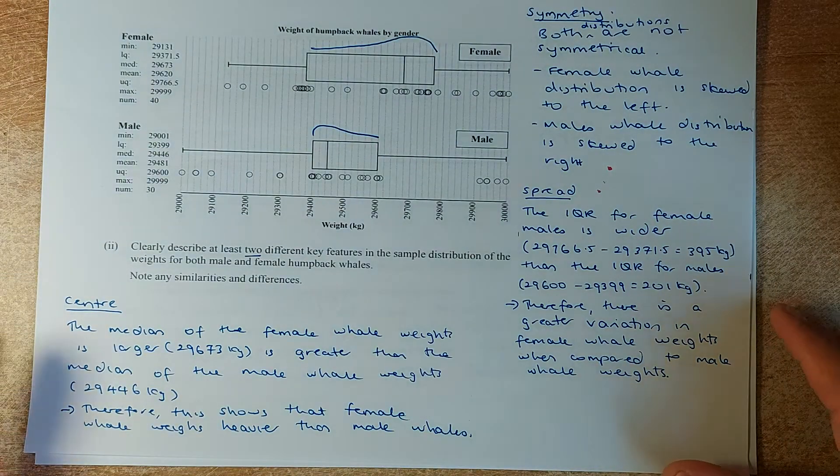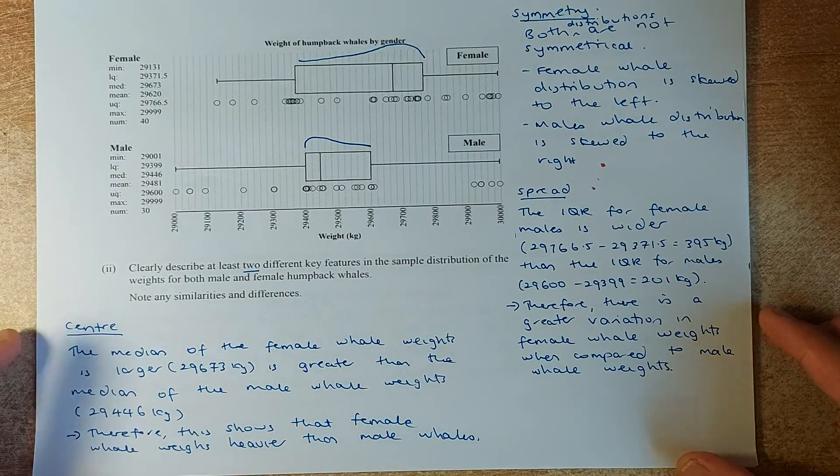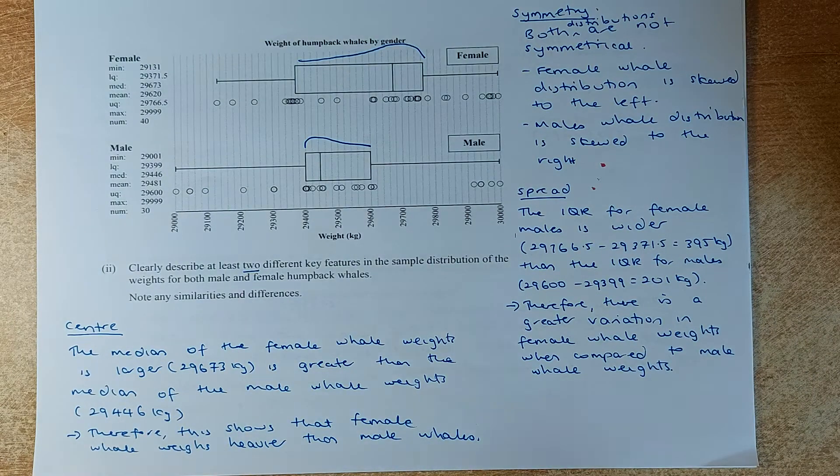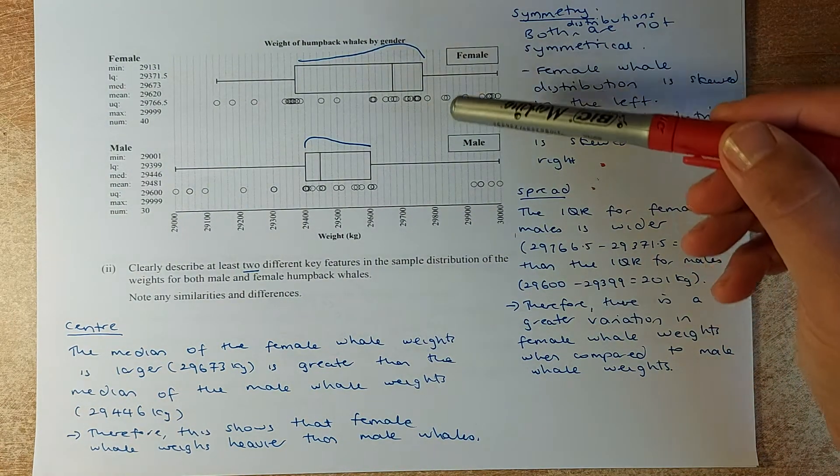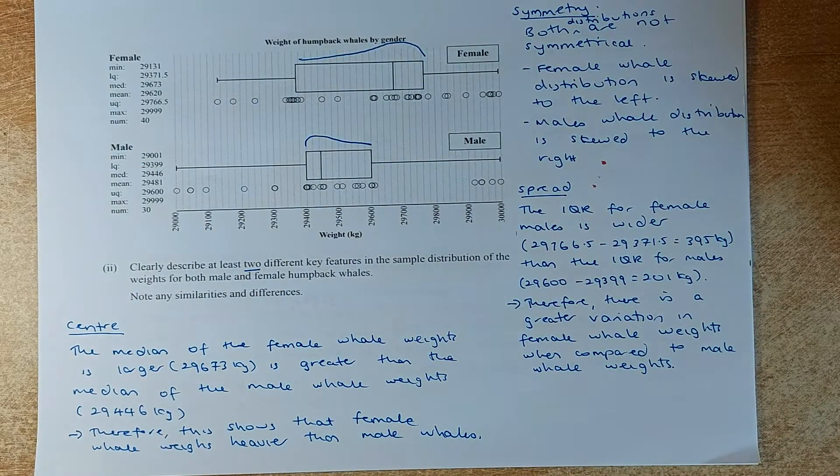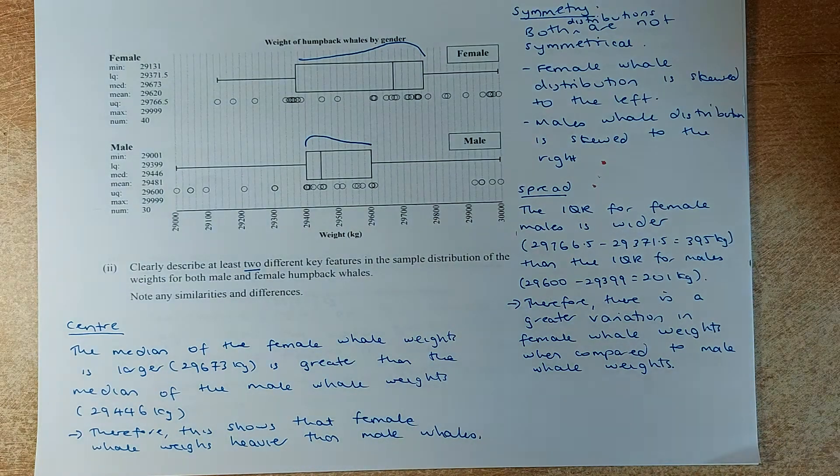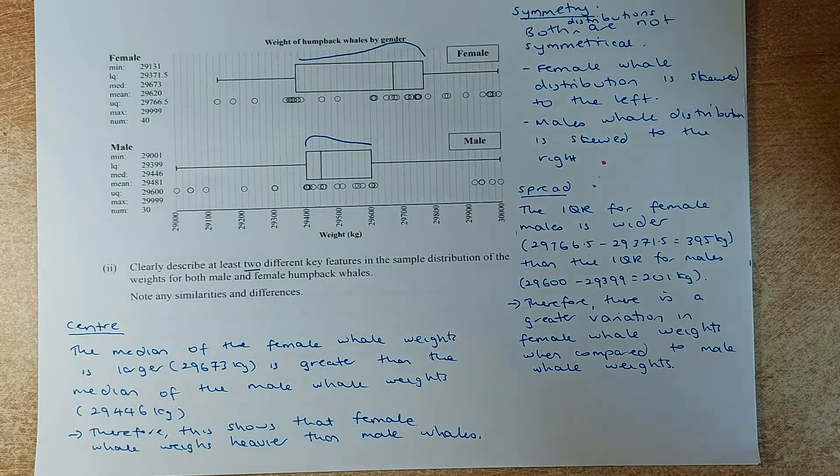The second question, this is a merit question. The merit question asks you, can you describe two different features between the distribution of the female and the male? There are many ways you can discuss. Because they asked for two, I'm going to give you three so you can decide which one is the easiest for you.